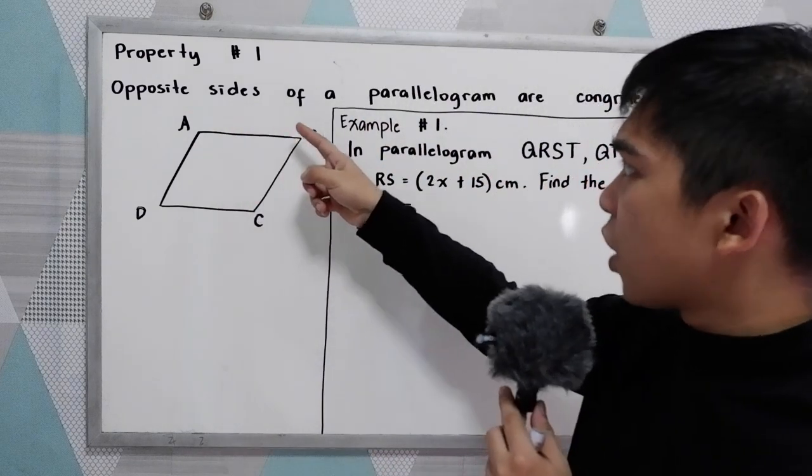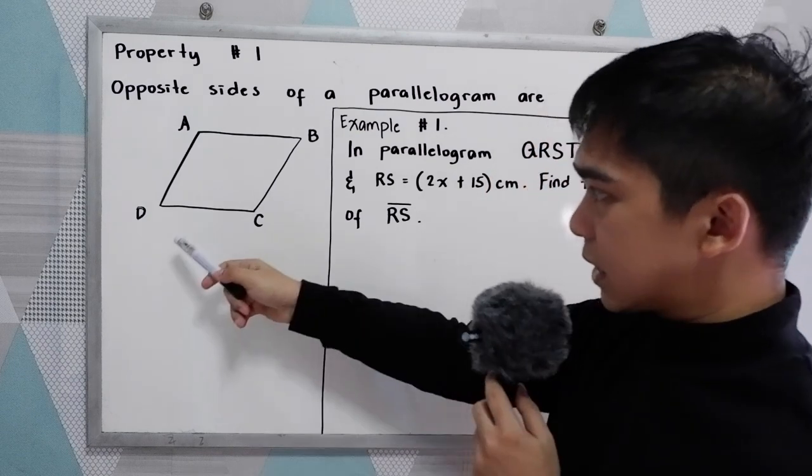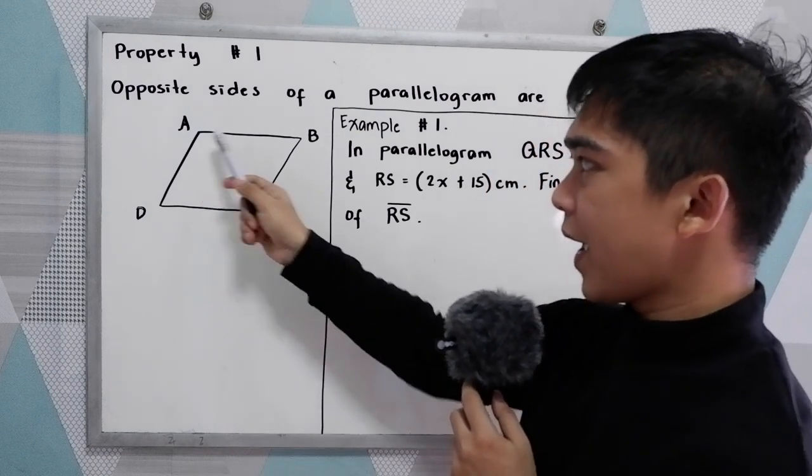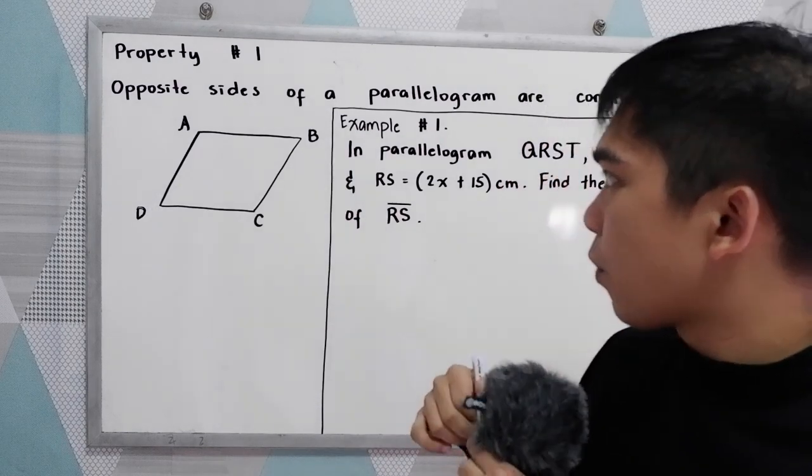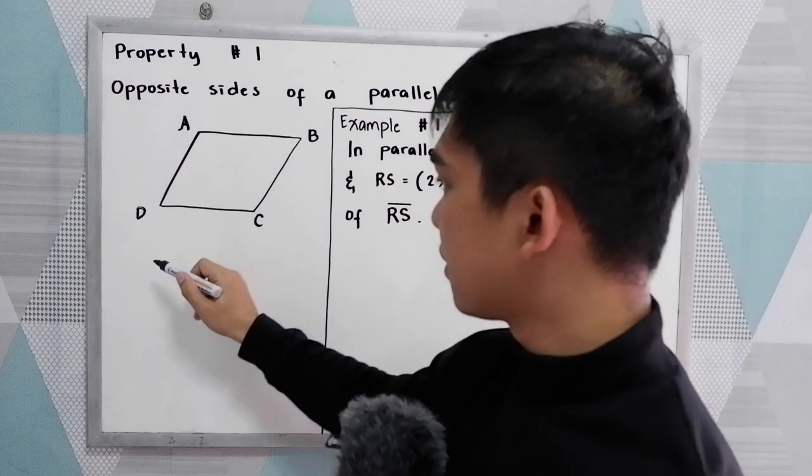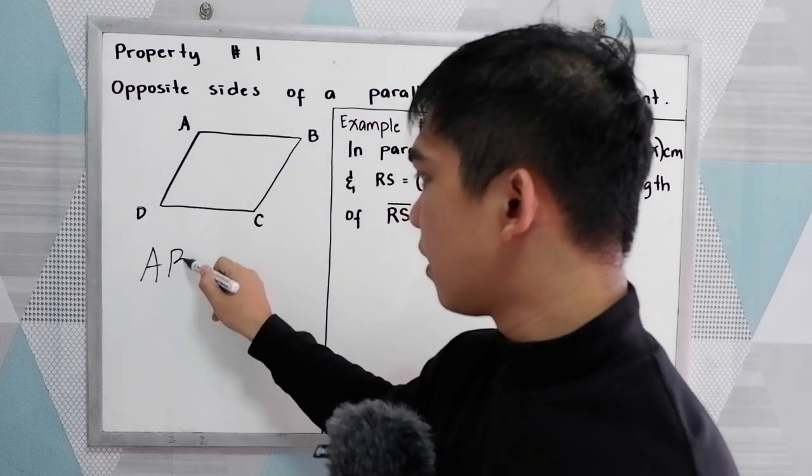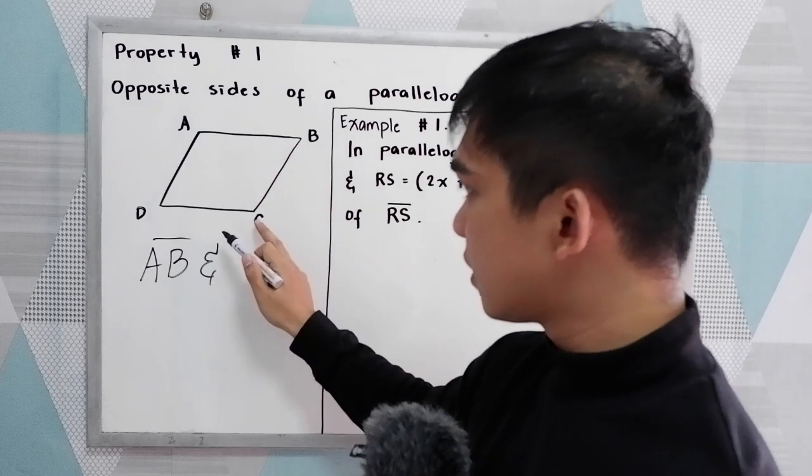Opposite sides of a parallelogram are congruent. So let's use this parallelogram ABCD. So opposite sides, our opposite sides here are AB and opposite to it is CD.